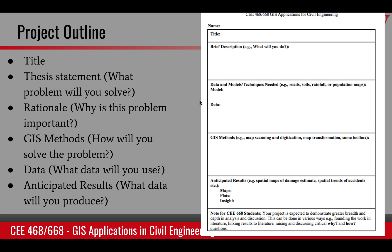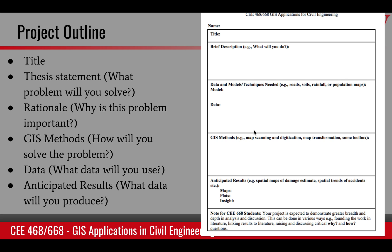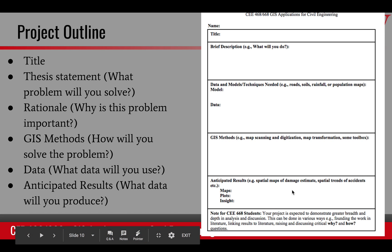The next part is GIS methods and data — how will you do it and what will you use to do it? These two boxes cover data and GIS methods. Lastly, what are your anticipated results? This will be maps, plots, and insights, so you should list the expected map or output.